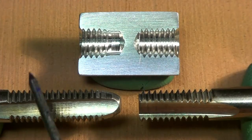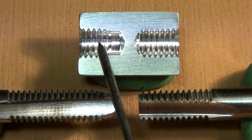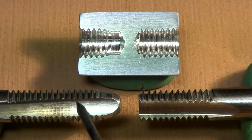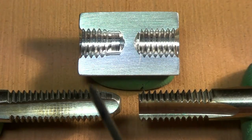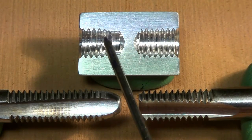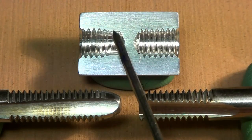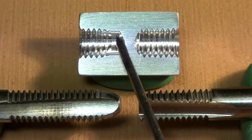This tap will produce a threaded hole like this. This is an M6 tap, and for this particular configuration the threads stop about two or three turns from the bottom of the hole.